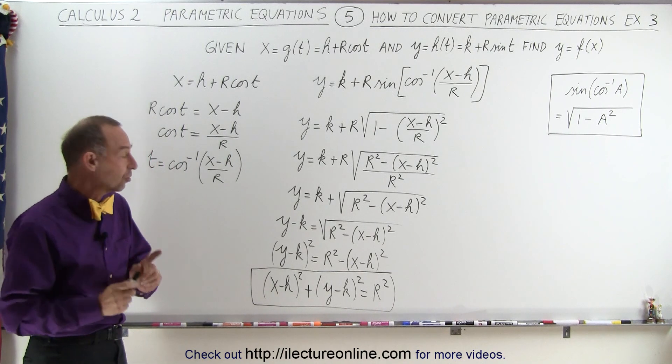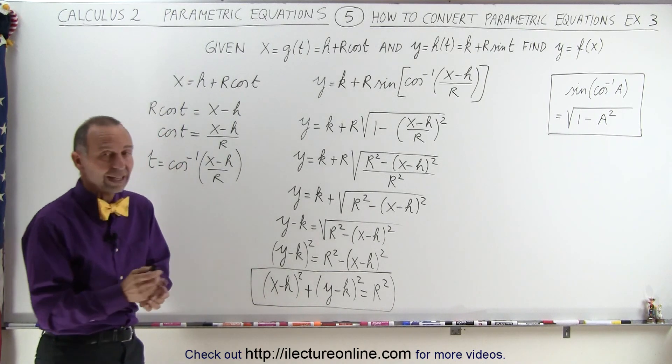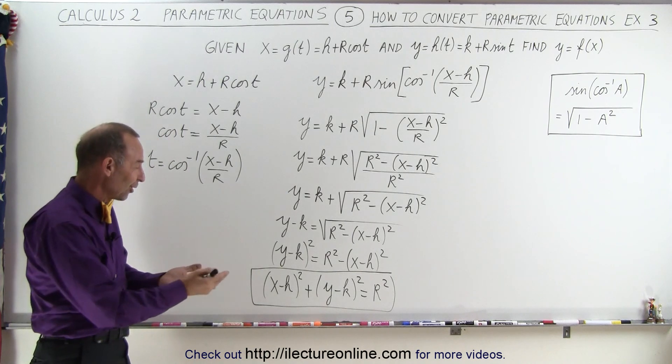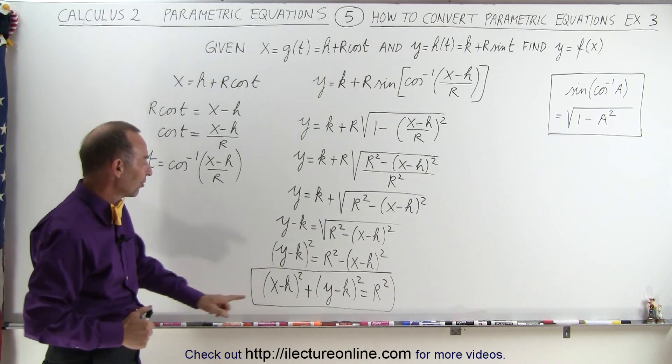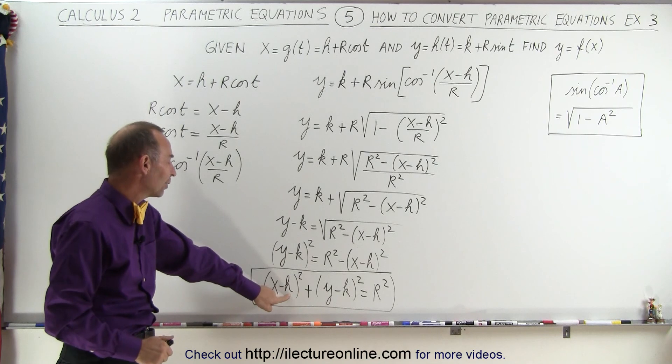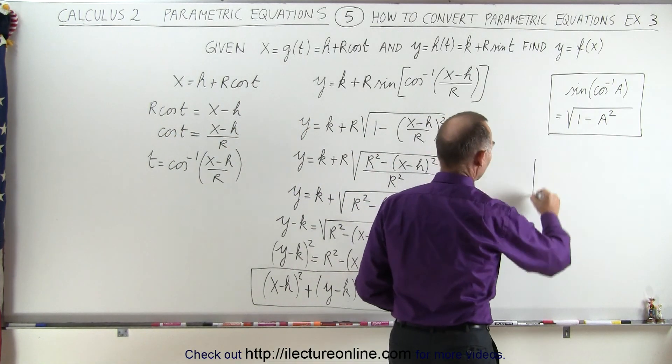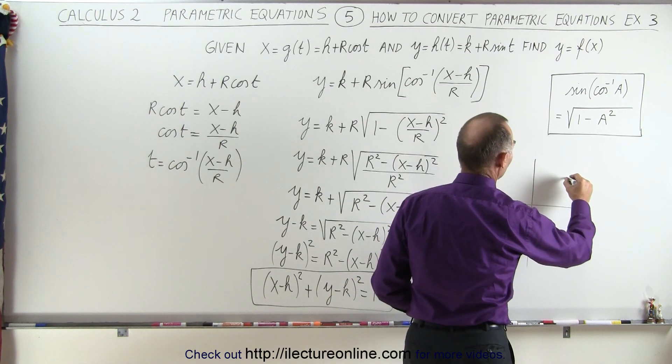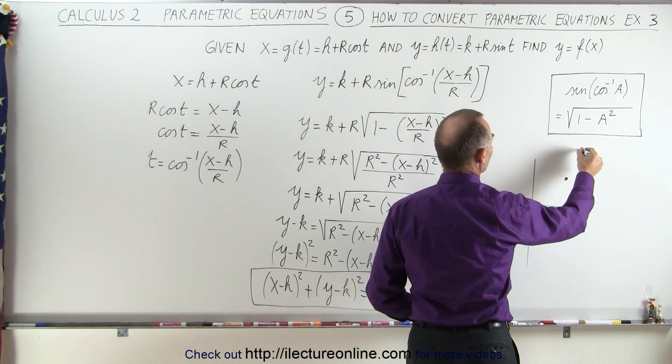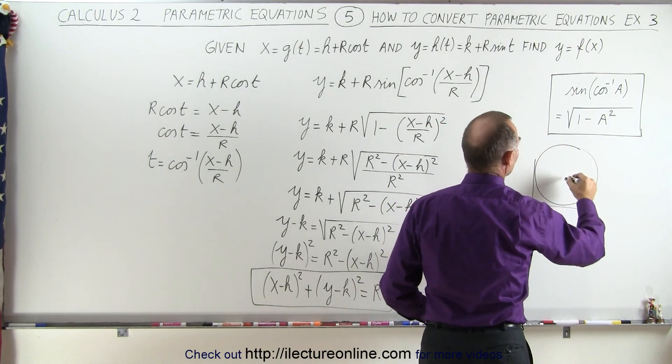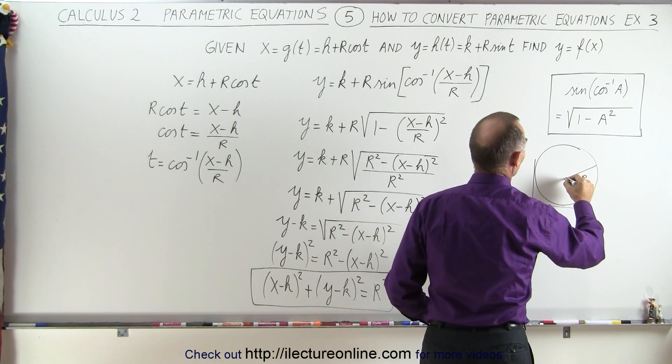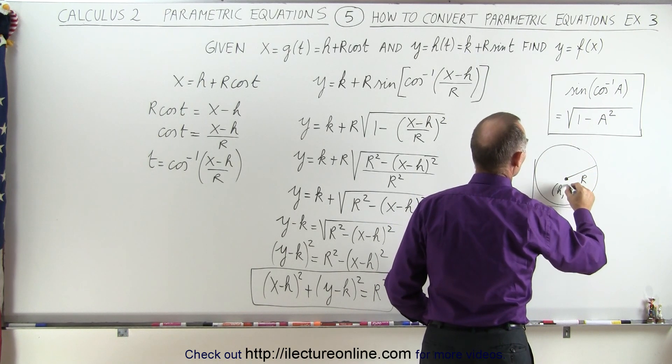But in this case, the origin is no longer at zero. I should say the center of the circle is no longer at the origin, but the center of the circle is now at the location of X equals H and Y equals K. So in other words, what we just found was that there's some point out here, and around that point there's a circle of radius R. And the point right here is at the location H, K.